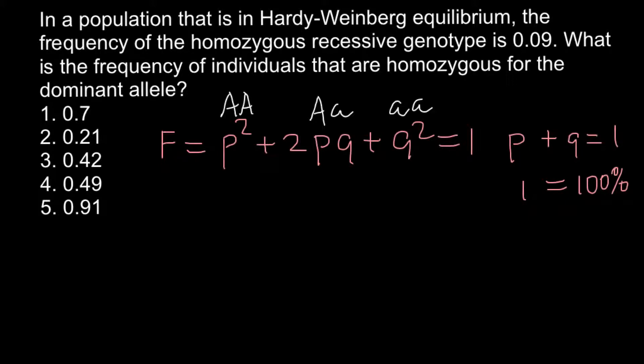P squared stands for the homozygous dominant genotype, 2PQ stands for the heterozygous genotype, and Q squared stands for the homozygous recessive genotype. We know that the frequency of the homozygous recessive genotype is 0.09, or 9%. Now we have to find the frequency of the individual that is homozygous for the dominant allele, which is P squared.